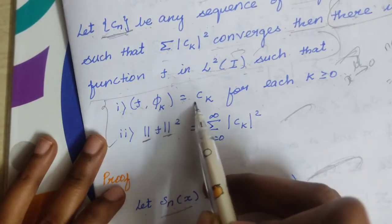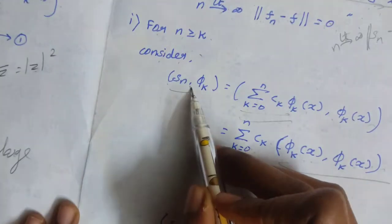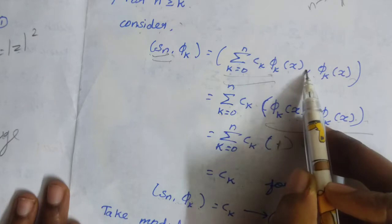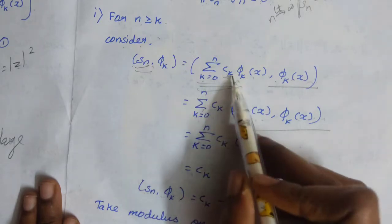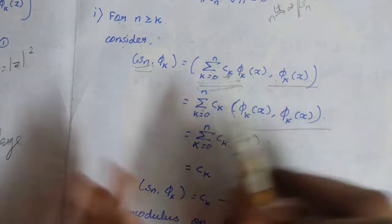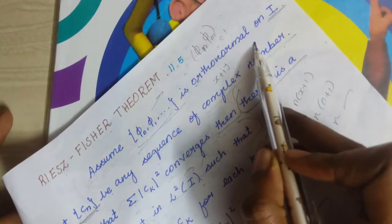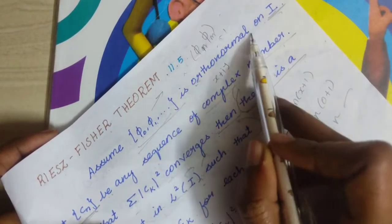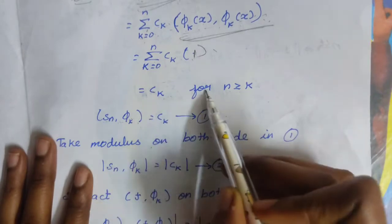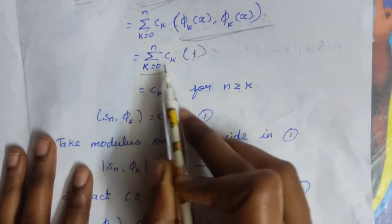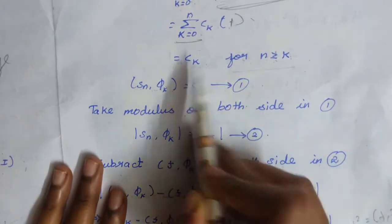Next, we prove the first condition: ⟨f, φₖ⟩ equals cₖ. For n greater than or equal to k, consider ⟨Sₙ, φₖ⟩. Since Sₙ equals summation from k equal to 0 to n of cₖ φₖ(x), we take the inner product with φₖ(x). By orthonormality on I — φ₀, φ₁, and so on — the summation from k equal to 0 to n gives us cₖ, and we label this equation number 1.